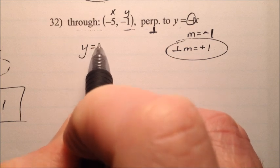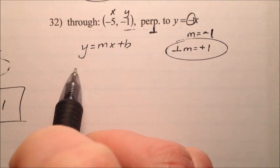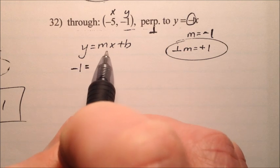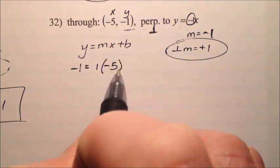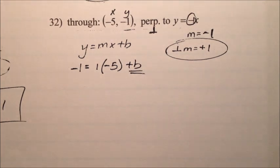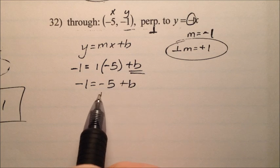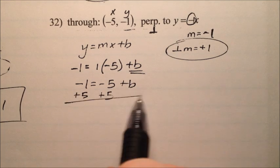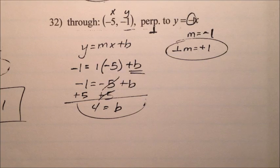So y equals mx plus b. We can plug this stuff in. For y, we get negative 1, and then m, our new one, is a positive 1. Our x is a negative 5, and the b is what we're solving for. So negative 1 equals negative 5 plus b. I can add 5 to both sides. So b ends up becoming a 4, a positive 4.